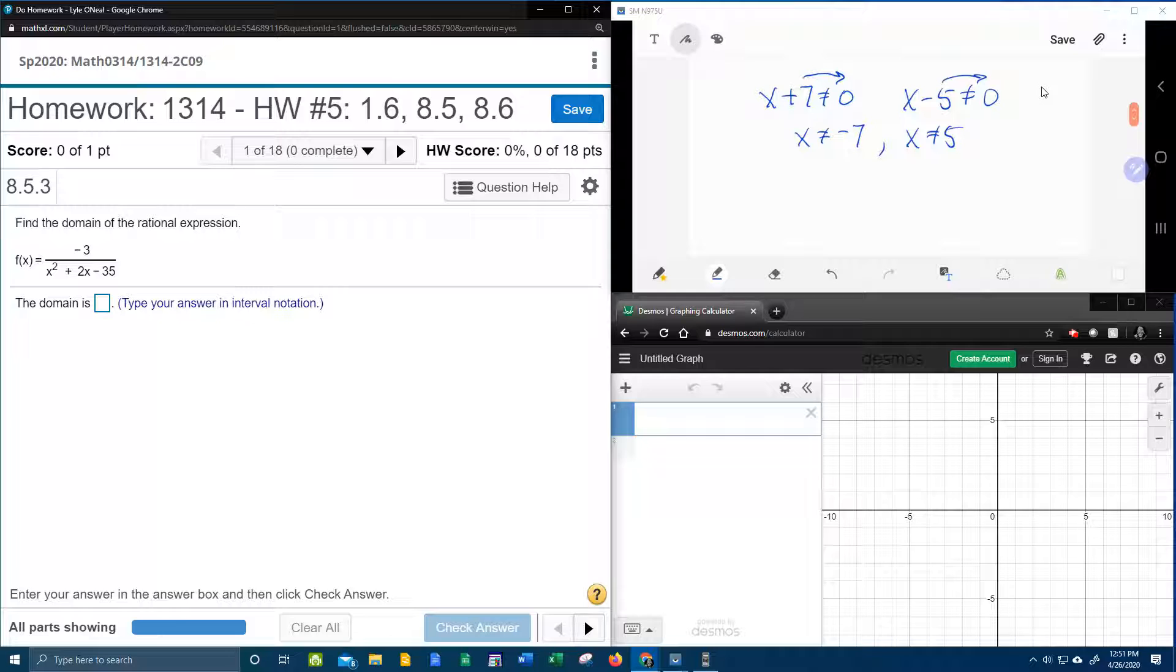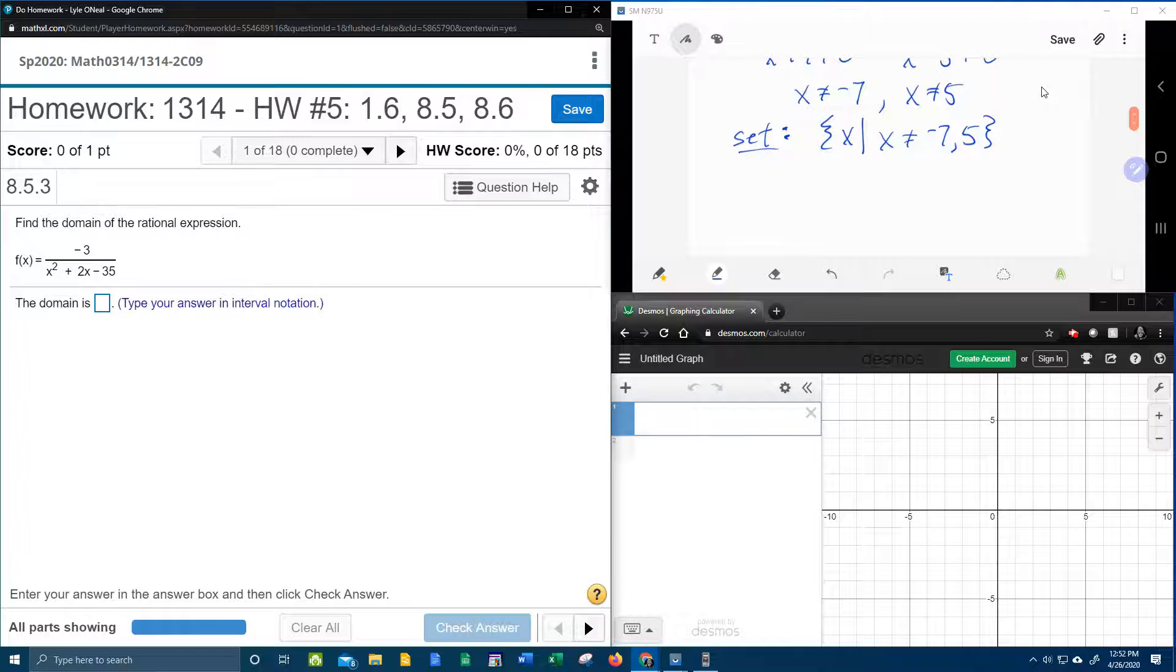So to write the domain in set notation, it will be the set of all x such that x cannot be negative 7 or 5. So what that says is x can be anything as long as it's not negative 7 or 5. That is set notation. But I believe the question wants the answer in interval notation.